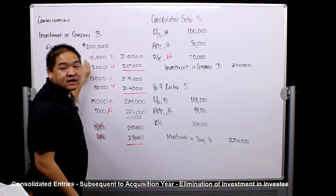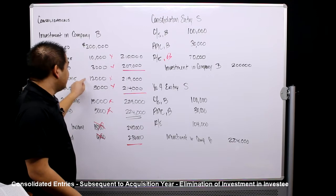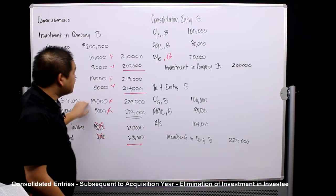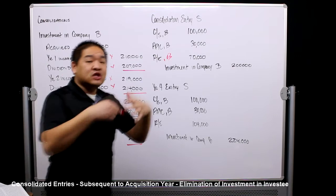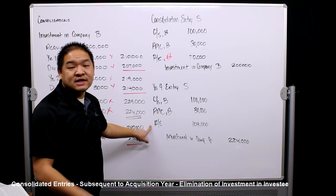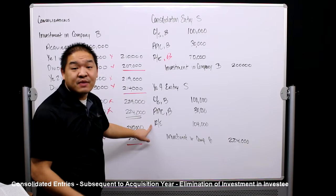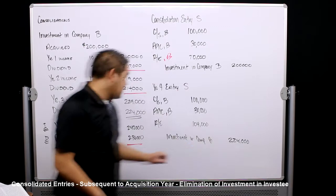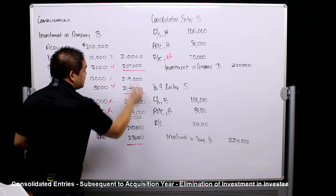Retained earnings reached $104,000 because each year's net income was added and dividends were subtracted: plus $10,000 minus $3,000, plus $12,000 minus $5,000, plus $15,000 minus $5,000, and so on. So in year four, when we make consolidation entry S, we debit common stock $100,000, additional paid-in capital $30,000, and retained earnings for $104,000 — not the original $70,000 — and credit investment in Company B for $234,000, which matches the account balance.